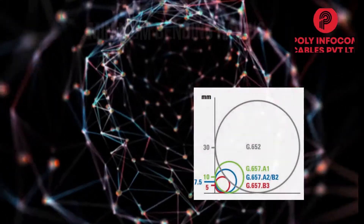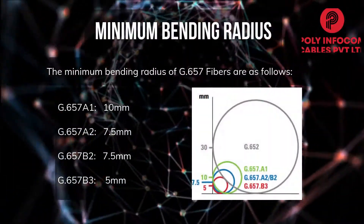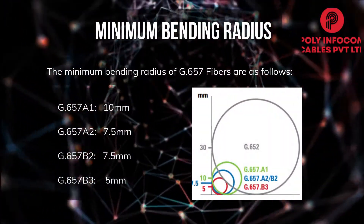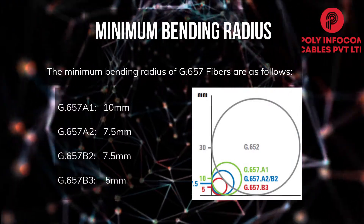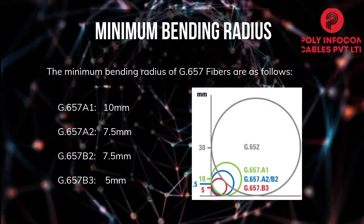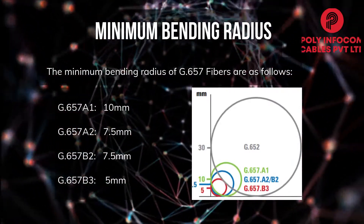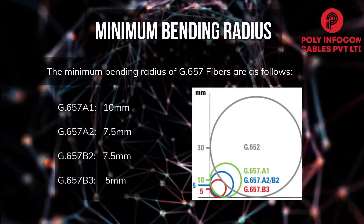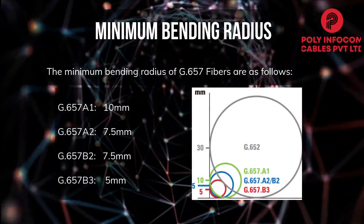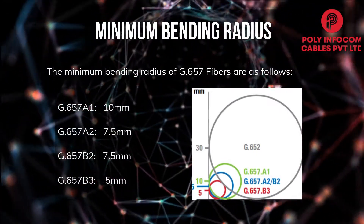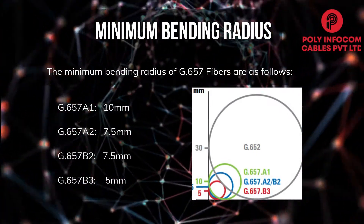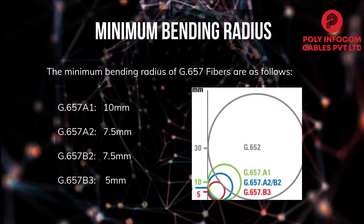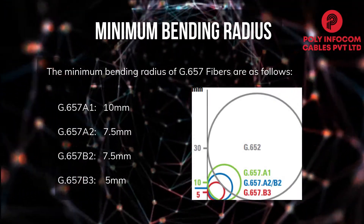The minimum bending radius of G657 fibers is as shown. G657B3 has the lowest bending radius, followed by G657B2 and G657A2 fibers.